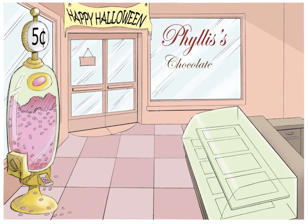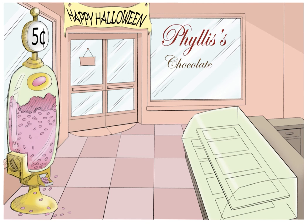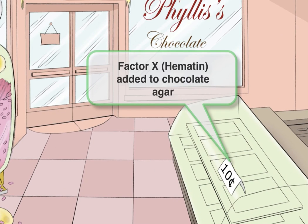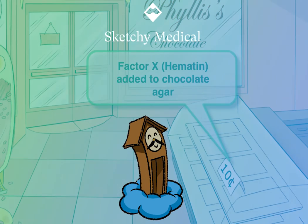For hematin being factor 10: if you remember the 10, you can remember the factor is hema-10, or hematin. To remember factor 10, we'll have Phyllis selling her chocolates for 10 cents, or one dime. We'll add the sign here, and we'll draw the chocolates in a little later.